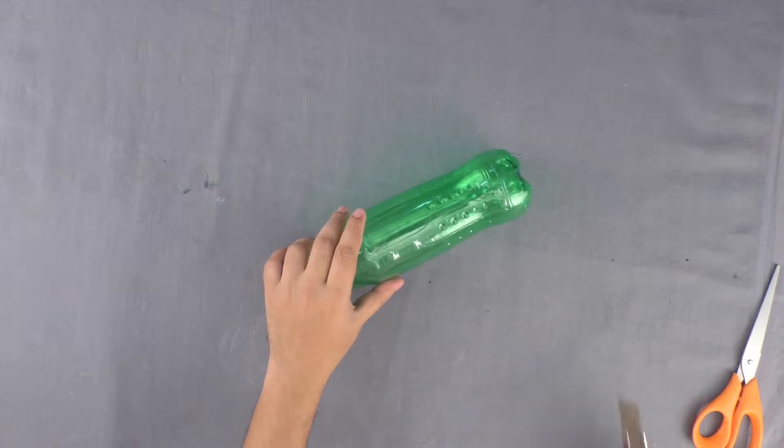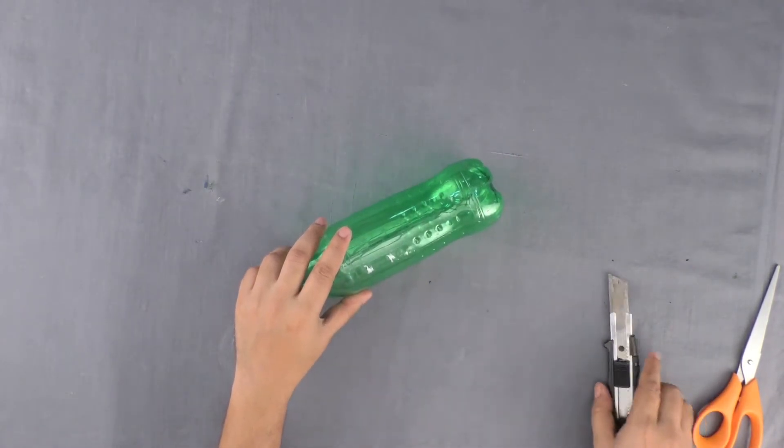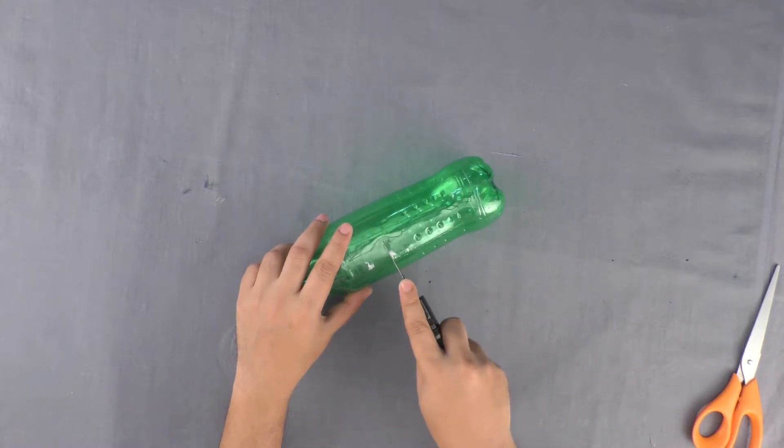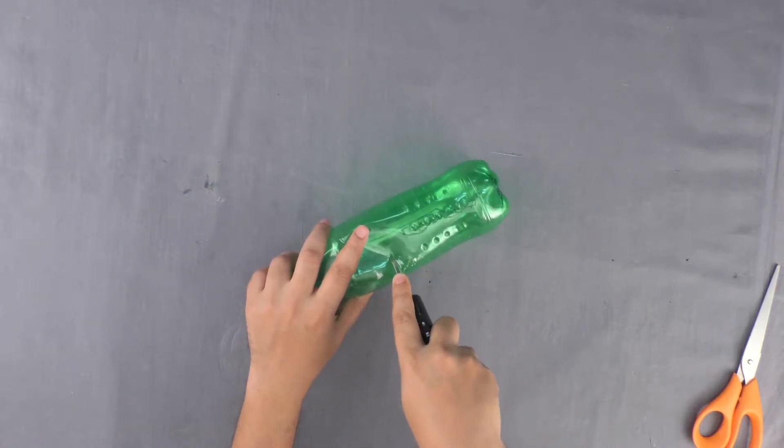A simple cola bottle can be made into a beautiful sea animal. Let us learn how to do it. First, take a plastic cola bottle and cut it into halves using a paper knife.